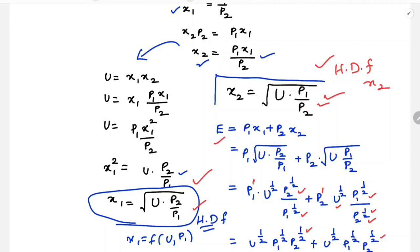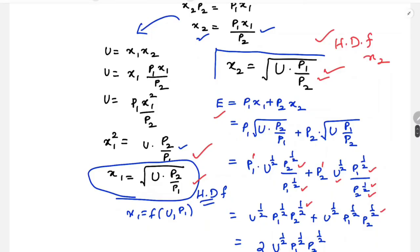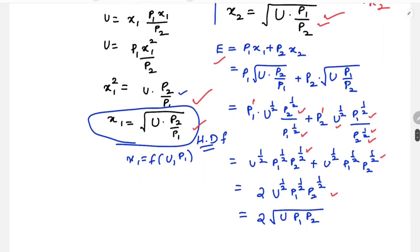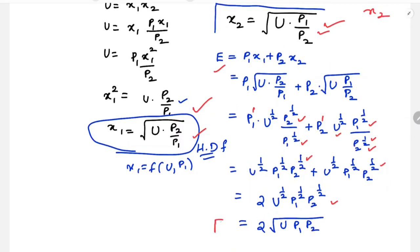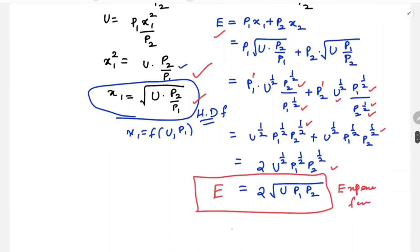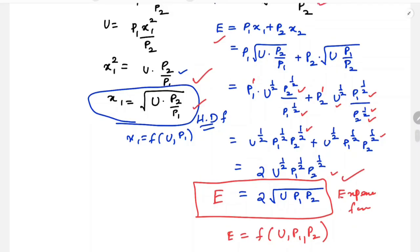Combining these, the expenditure function becomes E = 2·U^(1/2)·P1^(1/2)·P2^(1/2). This is the expenditure function — E is a function of utility U, P1 and P2. The expenditure function minimizes expenditure subject to the utility constraint.